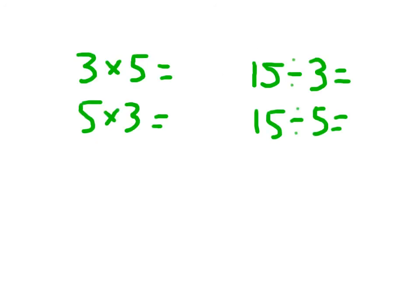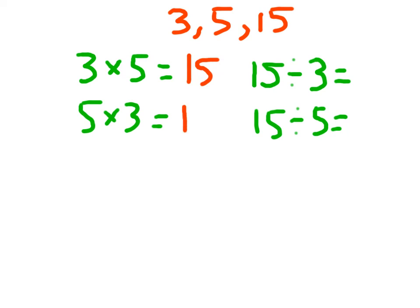This is a fact family relating the numbers 3, 5, and 15. 3 times 5 is 15. 5 times 3 is 15. 15 divided by 3 is 5. And 15 divided by 5 is 3. That's the fact family for 3, 5, and 15 — a multiplication and division fact family.